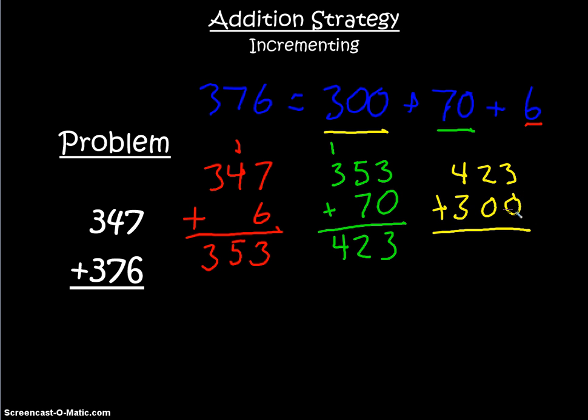3 plus 0 is 3. 2 plus 0 is 2, and 4 plus 3 is 7. So in the end, I end up with 723.